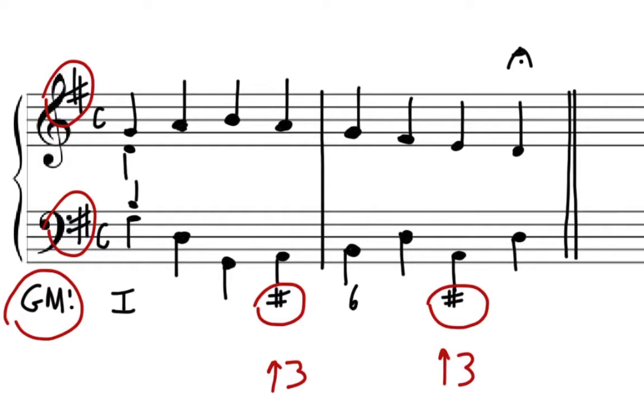And that's part of part writing and engineering these modulations is just being able to spot what is most likely to happen. So we began in the key of G, we saw the C sharp being added, and that told us that C sharp is basically an accidental that points to D. Let's go ahead and part write it.